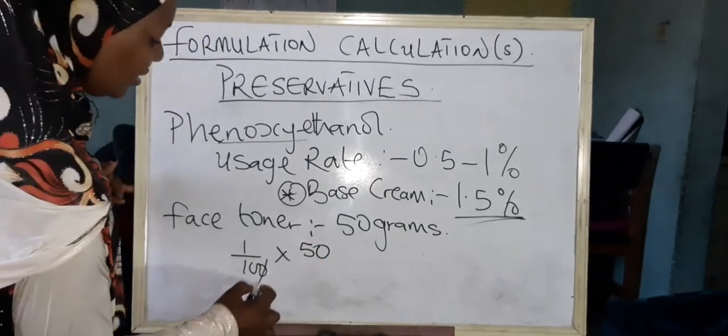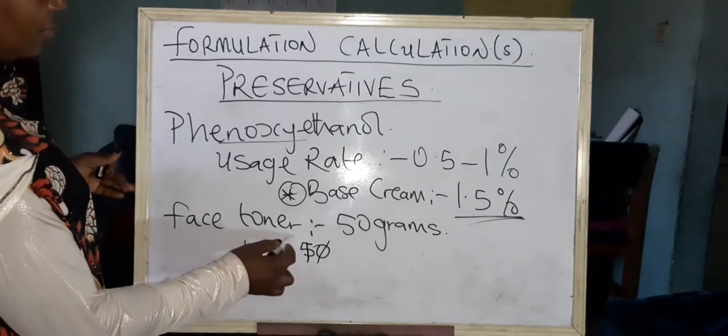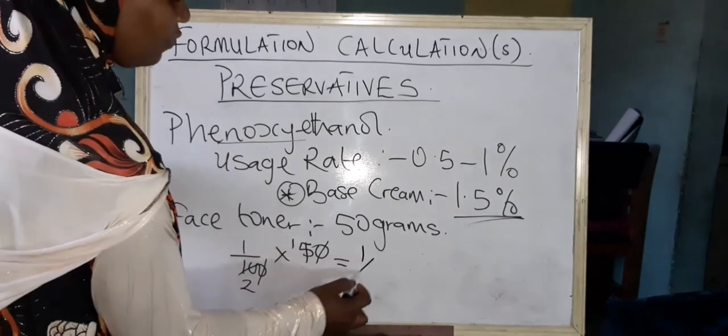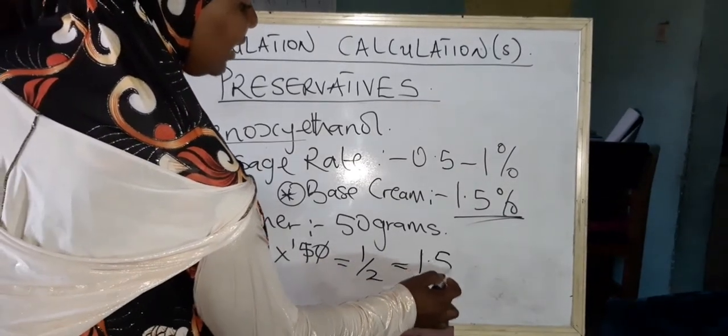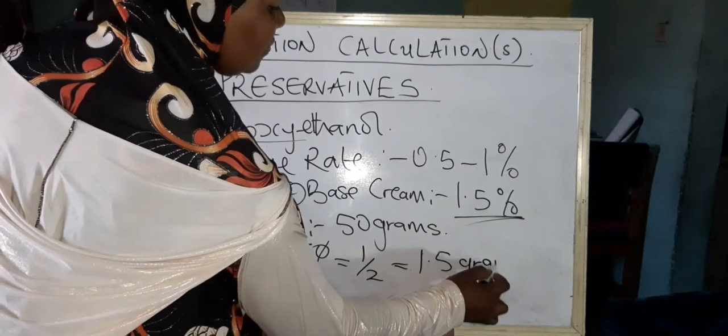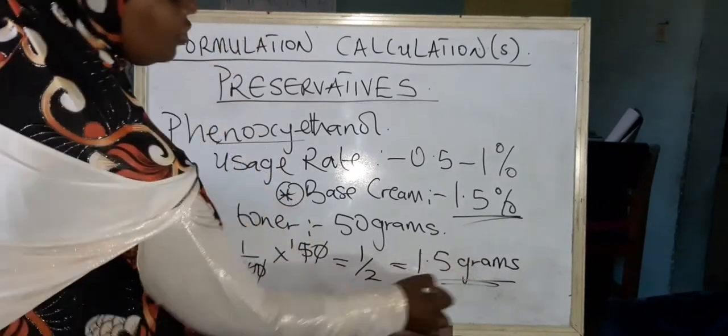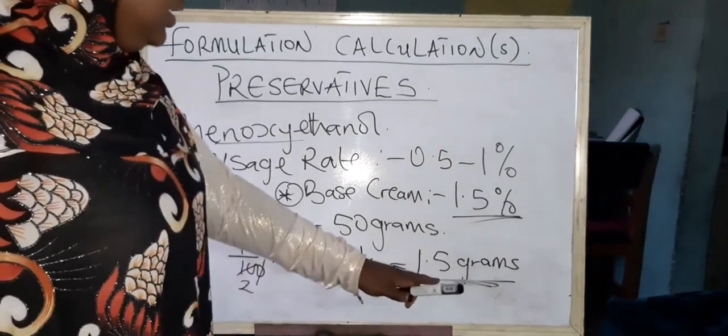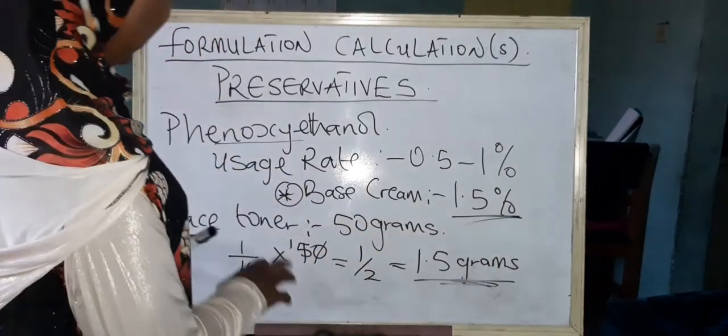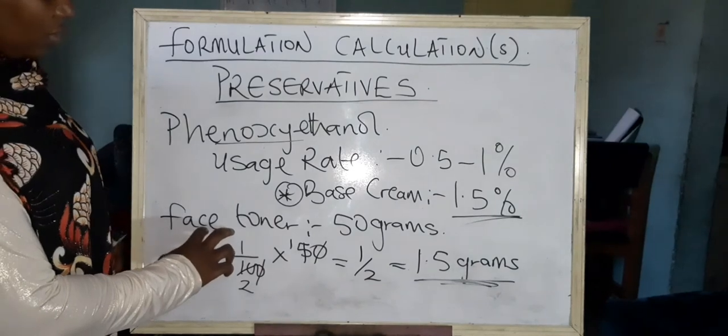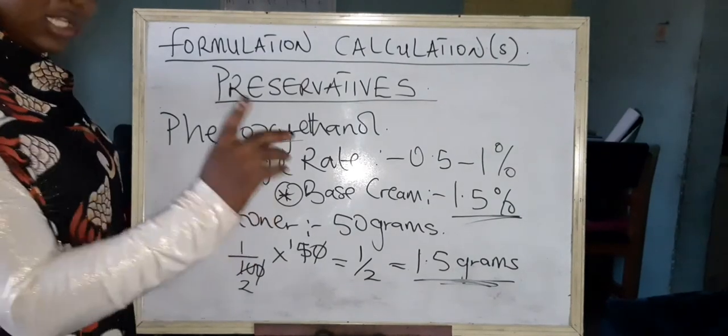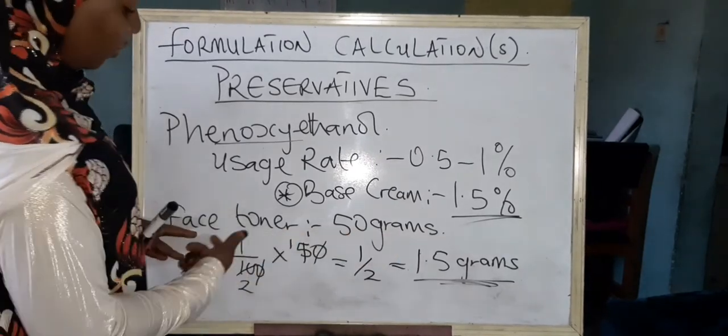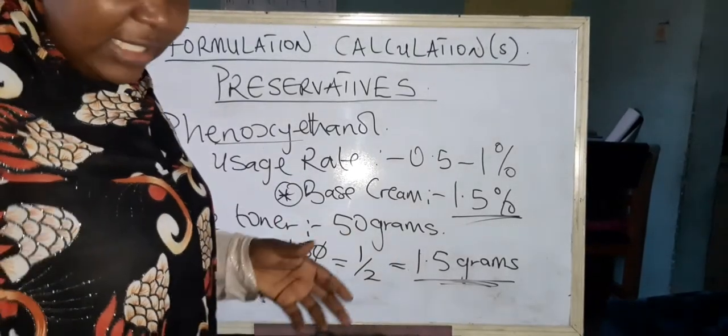Are you seeing? Now this one zero here can cancel this one zero. These five can go here one. These five can go here two. Now we're left with one over two, which is equivalent to 1.5 grams. Now your usage rate of your preservative of choice would be 1.5 grams in the quantity of a weight of about 50 grams of your face toner. Have I communicated here? You will need about 1.5 grams.